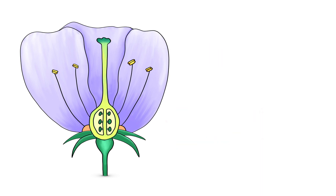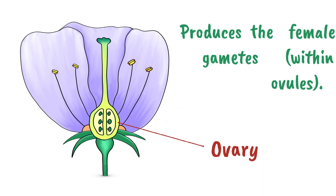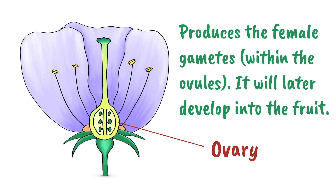At the bottom of the carpel, this large structure is the ovary. The ovary produces the female gametes within the ovules, and the ovary will later develop into the fruit.